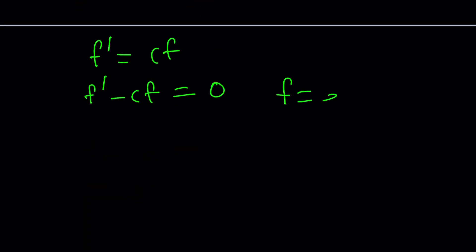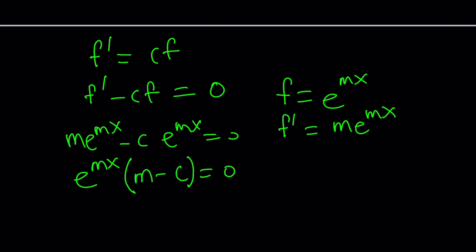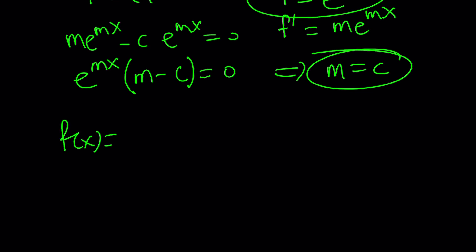f prime minus cf is equal to zero. So f has to be something like e to the power mx. That gives you the characteristic equation. Because if you differentiate f, you get that. And plug it in. You're going to get something like this. And take out e to the mx, which cannot be zero. You're going to get the value of m from here, which is c. c is kind of like a known constant. So m is c, which means f of x can be written as e to the power cx.